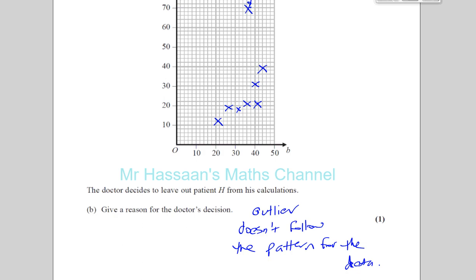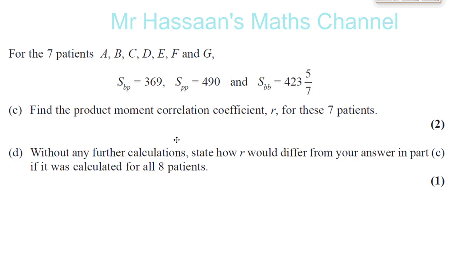Now we're going to go into part C. For part C, we're told some of the data about how the data varies. SBP, SPP and SBB. That tells you how the data varies, how varied it is amongst itself, like PP and BB and how they vary with each other. It gives you an indication of how close each item is to the mean basically. So you're going to find the product moment correlation coefficient, which is called R for these seven patients. Now this is something which is pretty simple to do because everything is given to us in the formula.